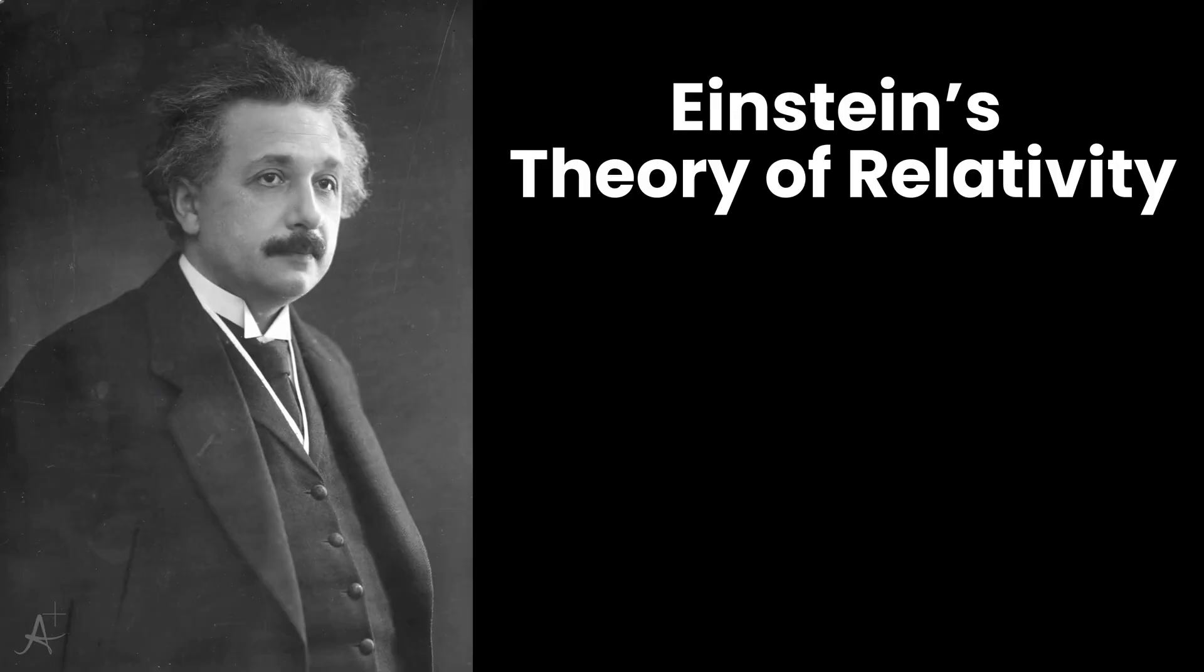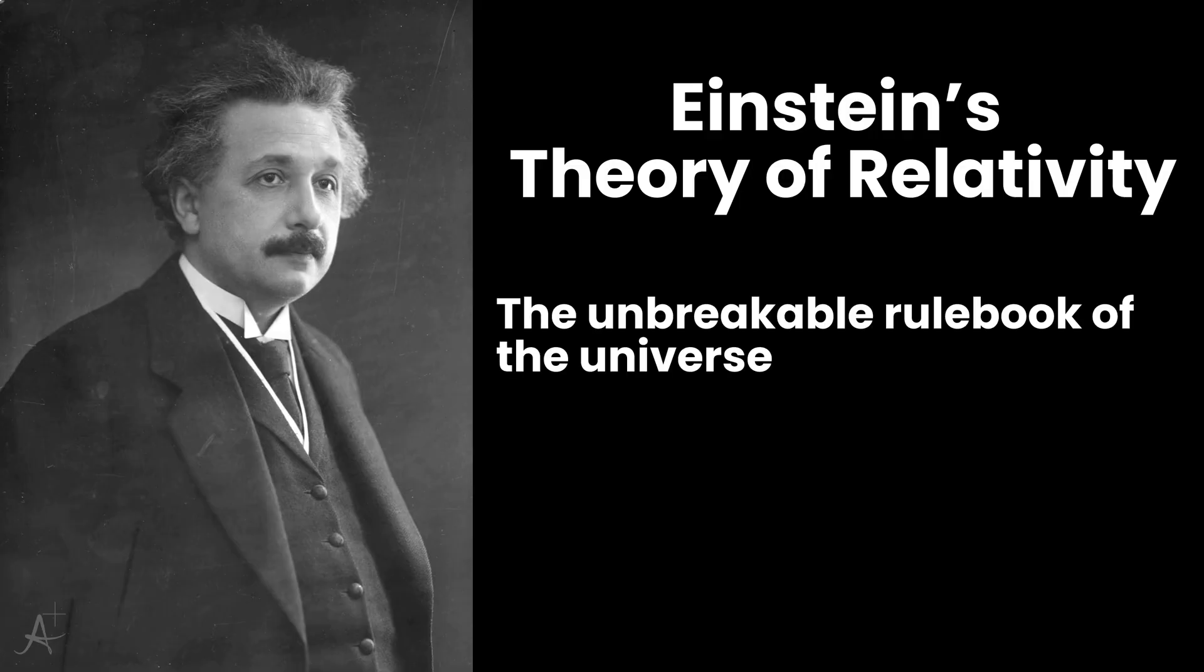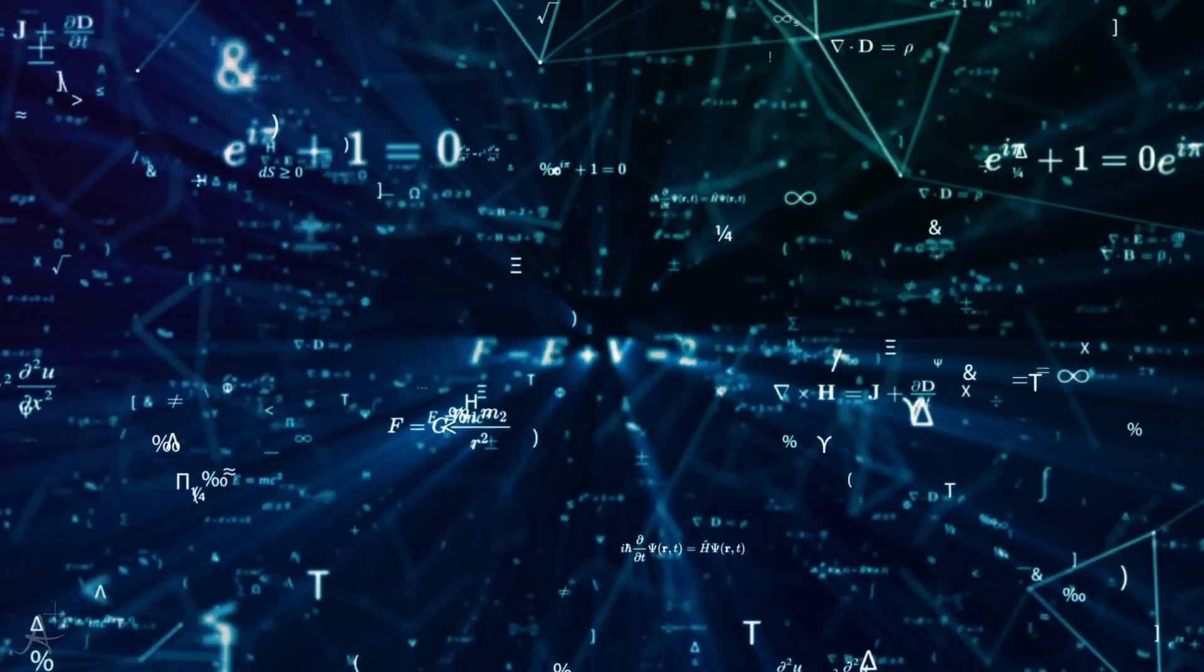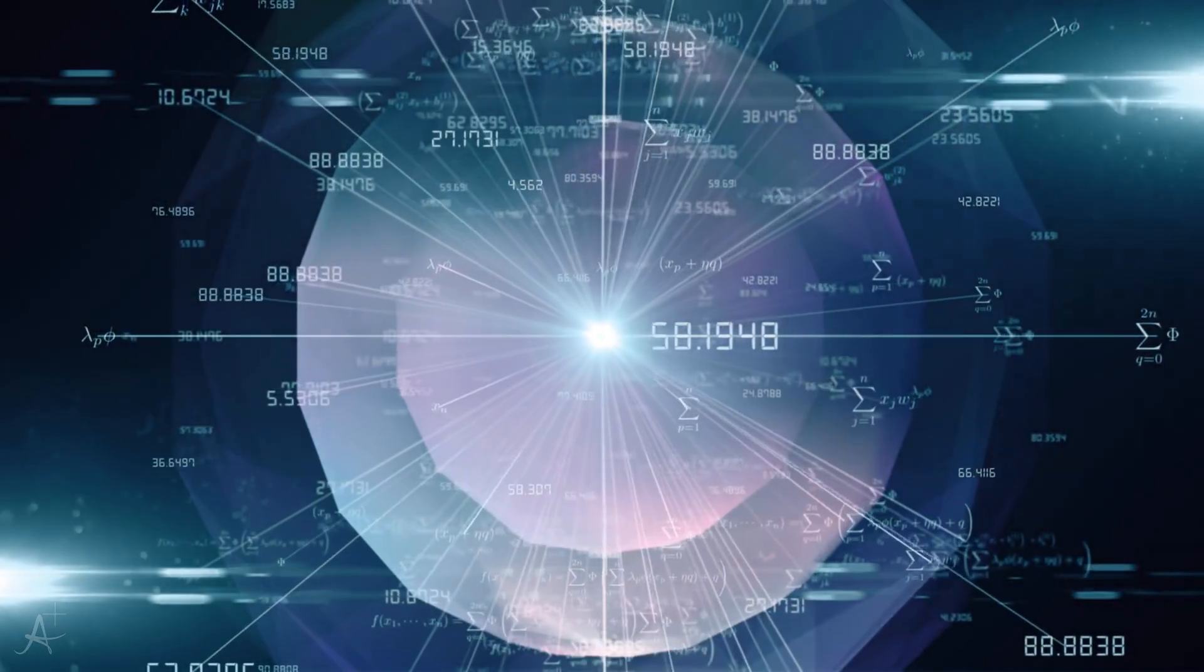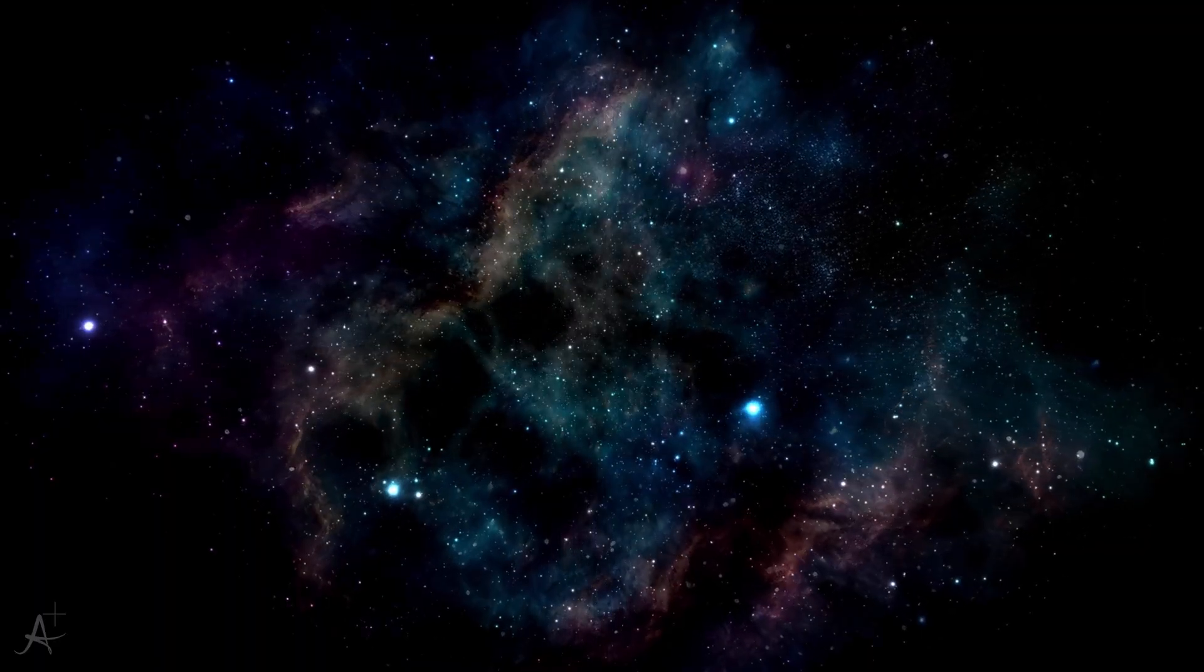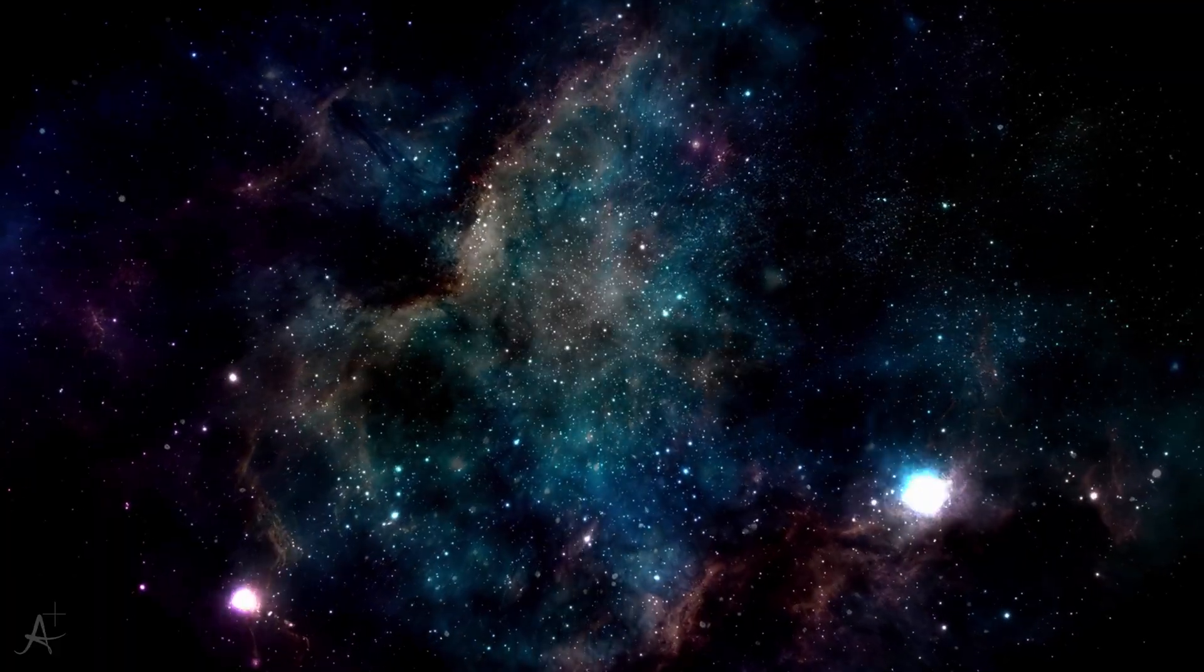For over a century, Einstein's theory of relativity has stood as an unbreakable rulebook, a cosmic contract written in the geometry of spacetime. Yet within those equations, physicists keep finding loopholes, cracks, and whispers of something more. Maybe the universe isn't saying you can't. Maybe it's saying you just haven't figured out how, yet.